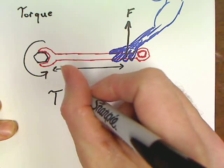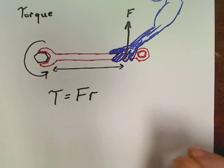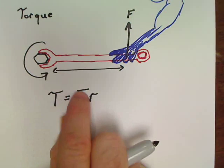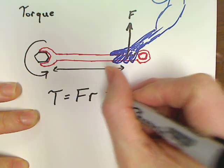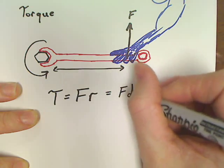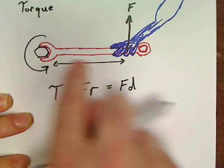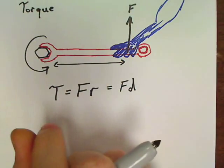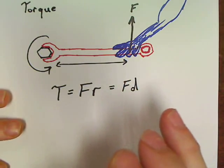So what I'm going to write is just simply Fr. So there is your basic equation for torque. It's a force times how far. Some books use this equation, some books will write Fd. It really doesn't matter. I just like Fr because I think about this as a radius, a distance from this pivot point. So anyway, there's our basic equation.